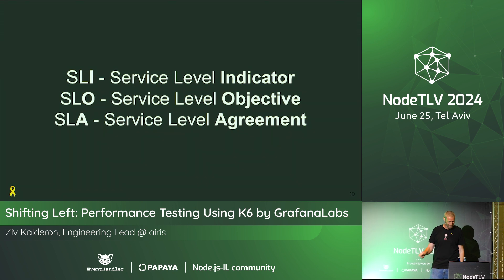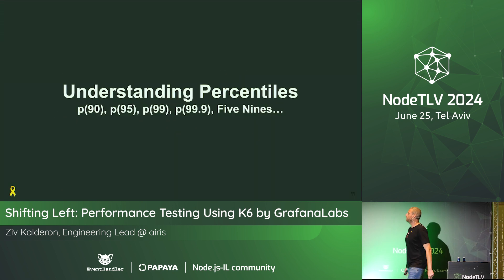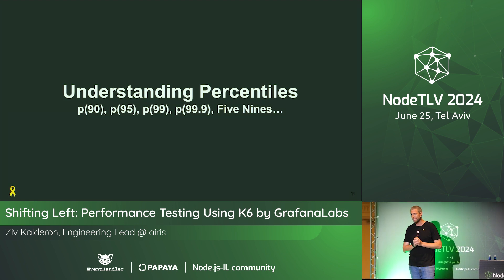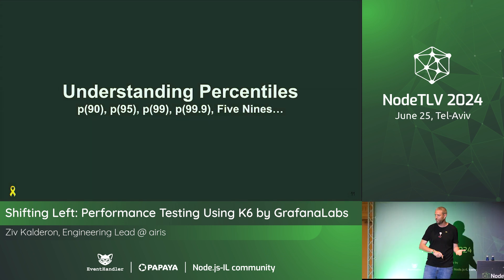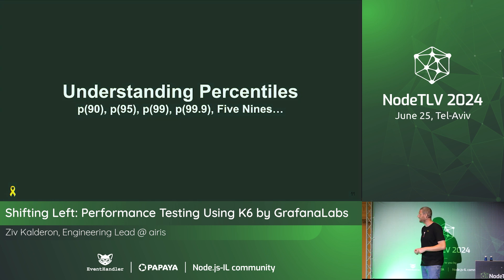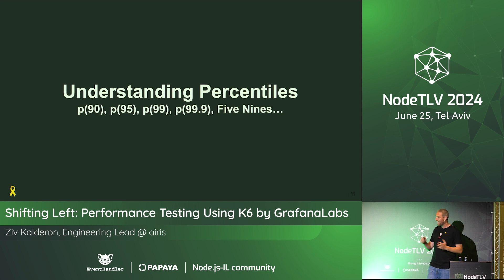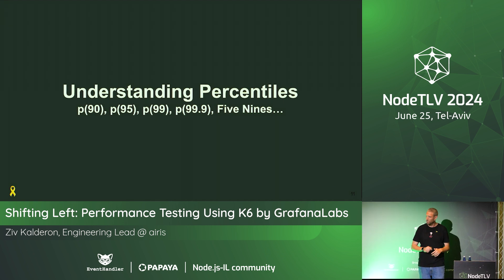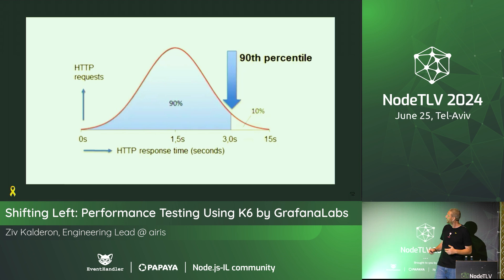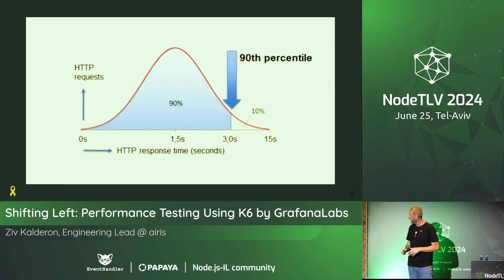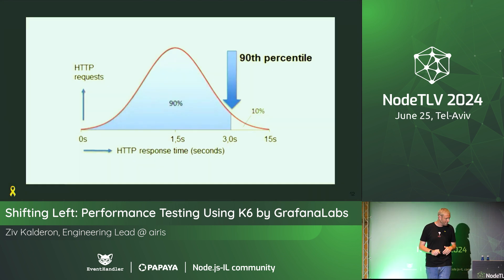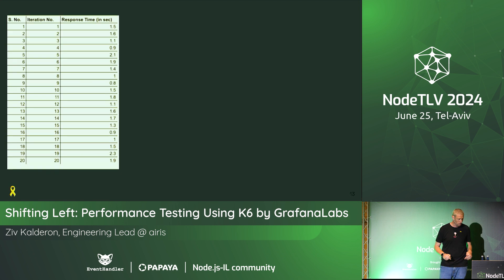When we're talking about performance, we deal with percentiles. We're not doing a single request like in unit tests — we're sending many requests, so we talk about p90, p95, five nines. Let's take an example of HTTP response time: p90 means 90% of requests took lower than three seconds.